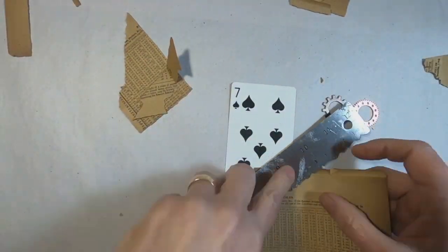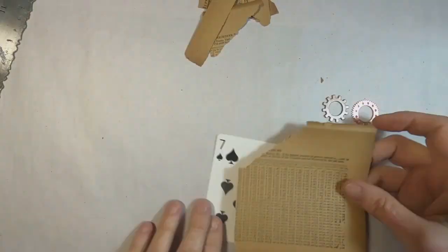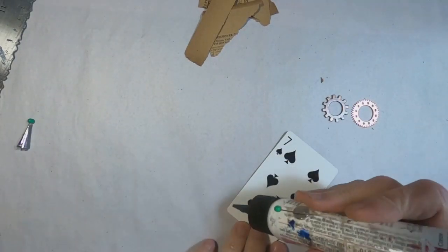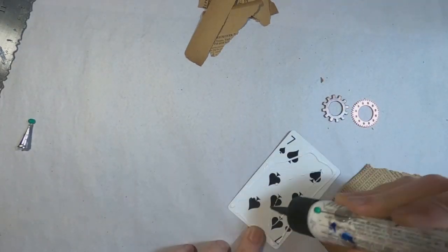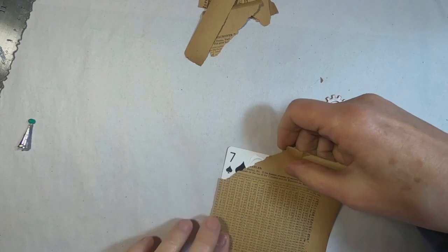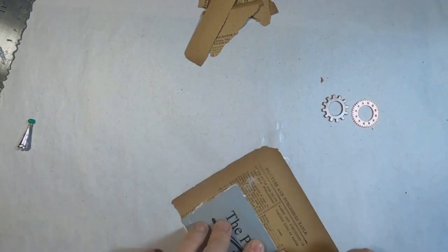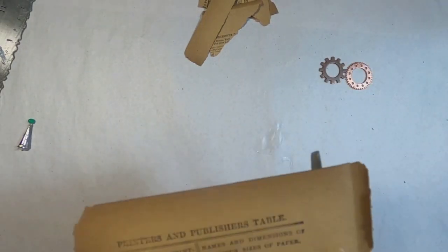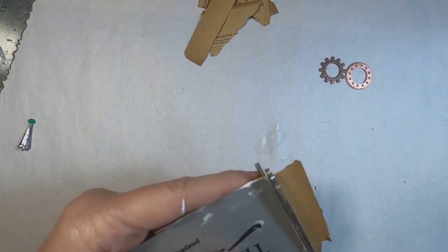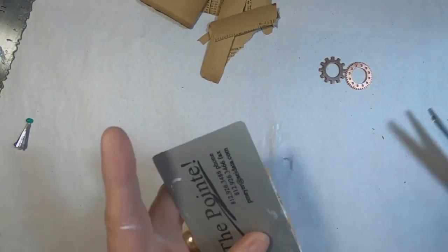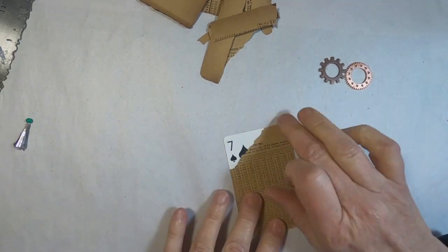So I'm positioning the page, trying to still continue to show the denomination of the card. I've decided in this year's deck, I want the card to show on every single piece. I'm just gluing this page down, and we'll trim around the edges, and that will be our foundation.